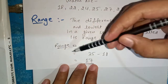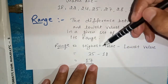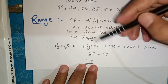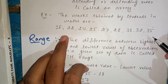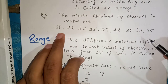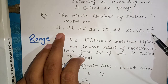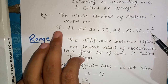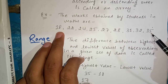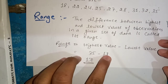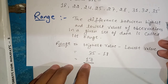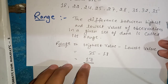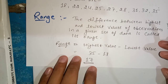So we can write the formula: range is equal to highest value minus lowest value. If we see in this data — in the array which has arranged our data — the highest value is 35 and the lowest value is 18. So if we subtract 18 from 35, that gives us the range. Our range is 17.